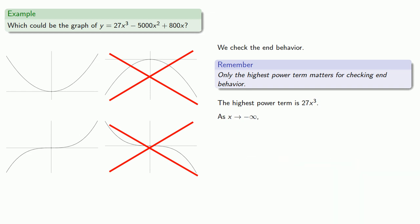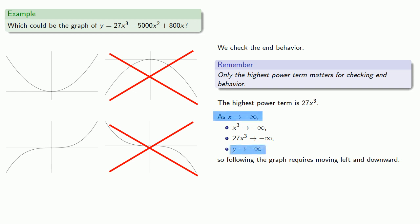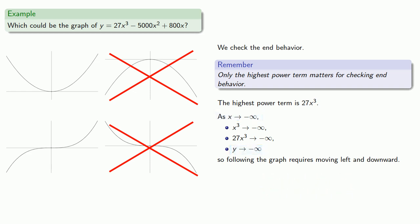In the other direction, as x goes to minus infinity, x cubed goes to minus infinity, so 27x cubed goes to minus infinity, and y goes to minus infinity. So following the graph requires moving left and downward. This means it can't be one of the remaining graphs, and it must be the other.